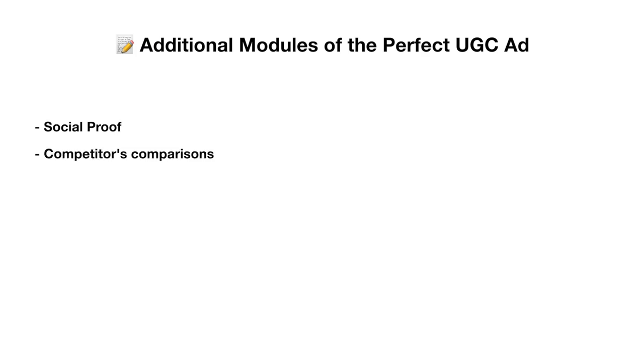I like to think of all these different parts as modules, and some of them can be mixed and matched. Some other types of modules that you can include when developing content for ads are social proof, competitor comparisons if you're familiar with a competitor of that brand, a how-to or tutorial on how to use the product, and also details on shipping — especially if they have super fast shipping, which is often very important to consumers.